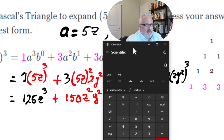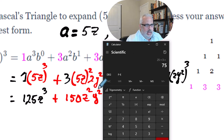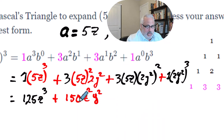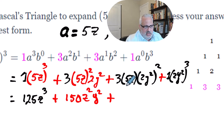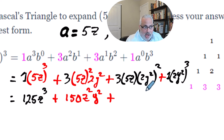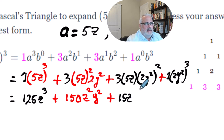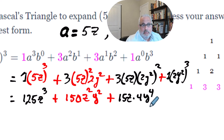Let me verify with the calculator: 5 times 5 is 25, times 3 is 75, times 2 is 150. So 150Z squared Y squared. Plus: multiply 3 times 5 to get 15Z. Then (2Y squared) to the second power — 2 squared is 4, and Y squared to the second power using the power-over-power property gives Y to the fourth. So the third term becomes 15Z times 4Y to the fourth.